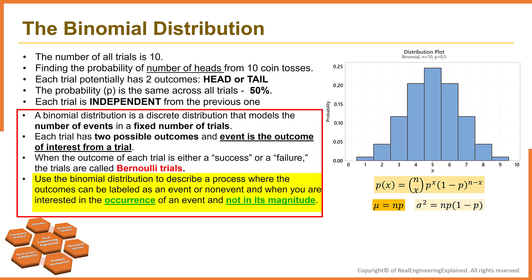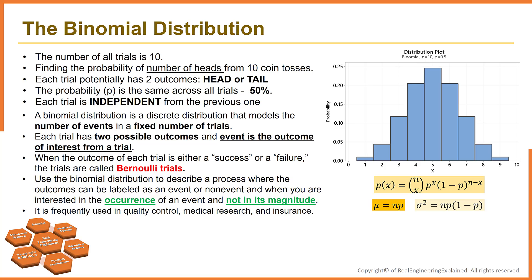Use the binomial distribution to describe the process where the outcomes can be labeled as an event or non-event and when you are interested in the occurrence of an event, not in its magnitude. It is frequently used in quality control and inspection. One item could pass or fail the inspection. It has applications in medical research and insurance.